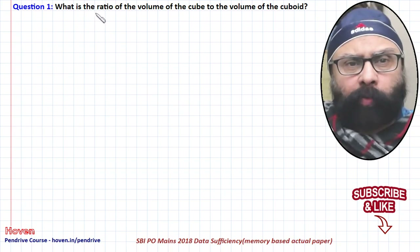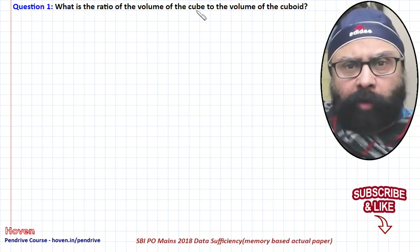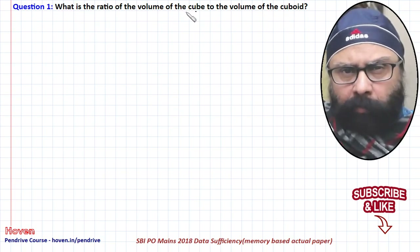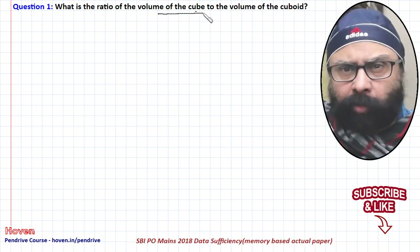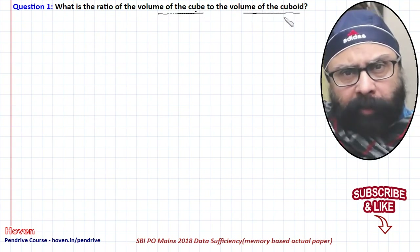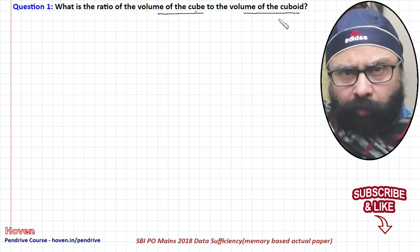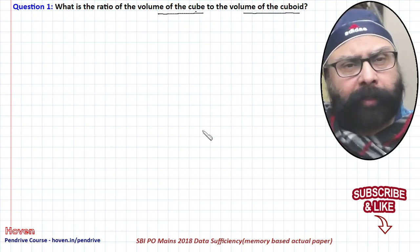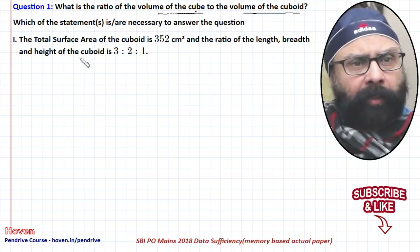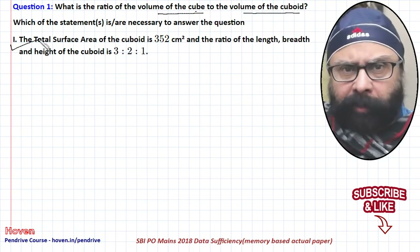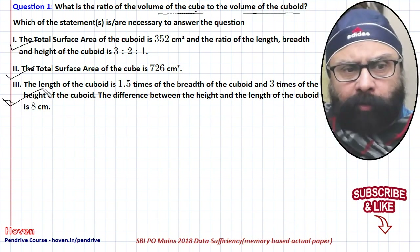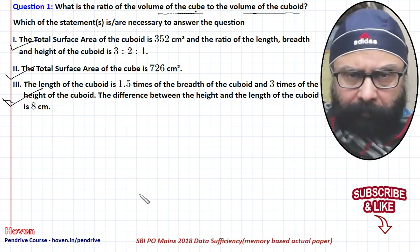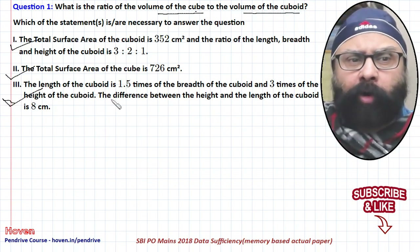The first question is: what is the ratio of the volume of the cube to the volume of the cuboid? The volume of the cube must be known and the volume of the cuboid must be known, then we will be able to obtain the ratio. He has given three statements. Let us examine all three statements.